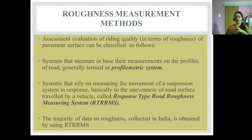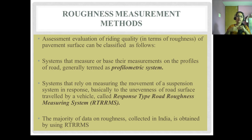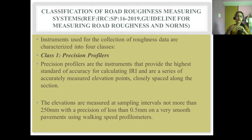The assessment of riding quality of pavement surface can be classified into two types: profilometric systems, which measure or base their measurements on the profile of the road, and response type road roughness measuring systems (RT-RRMS), which rely on measuring the movement of a suspension system in response to the unevenness of the road surface. The majority of roughness data collected in India is obtained using RT-RRMS. Instruments are characterized into four classes per IRC guidelines.